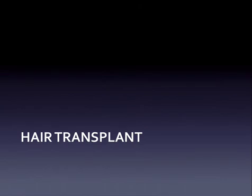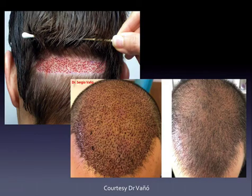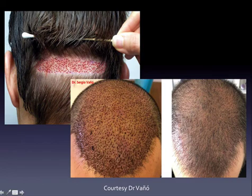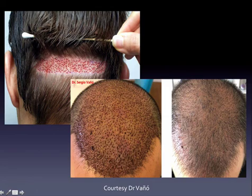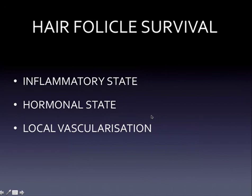Regarding hair transplant, we can monitor whether the hair implant is in an inflammatory phase or whether we are losing the graft. This is the usual technique of follicular extraction unit — we remove the hair follicles from the occipital area and implant them in the frontal area. We can detect hair follicle survival by observing the inflammatory state, the hormonal state, and the vascular vascularization through ultrasonography.